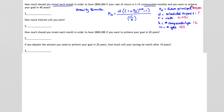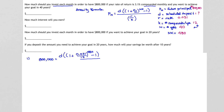Setting up part one: 800,000 equals D times (1 plus 0.031 divided by 12) raised to the N times K power, minus 1, all divided by 0.031 over 12. N times K is 12 times 40, which is 480. So the exponent is 480, giving us: 800,000 equals D times (1 plus 0.031/12) raised to the 480, minus 1, divided by 0.031 over 12.